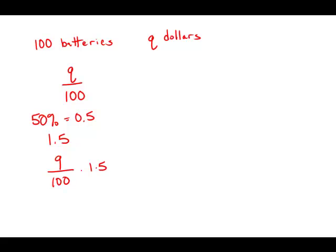Because the first is a fraction, I'm going to change the second to a fraction. Q divided by 100, and 1.5 as a fraction is 3 over 2. When I multiply fractions, you just multiply right across: 3Q over 200. This is the price of the batteries after the 50% increase, and this is answer choice A.